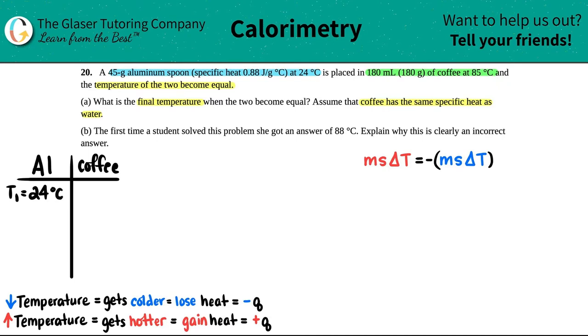And the coffee was initially at 85 degrees Celsius. It makes sense—coffee's hot, the spoon before you place it into the coffee should be room temp. 24 degrees Celsius makes sense. Ti = 85.